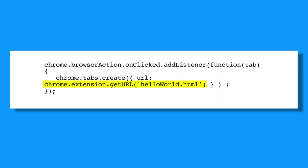Now let's look at the call to chrome.extension.getURL. This is an example of a synchronous function call, meaning that it does its thing immediately and returns a value to the calling code. In this case, it's constructing a URL which the browser can use to navigate to a resource which is within your extension.